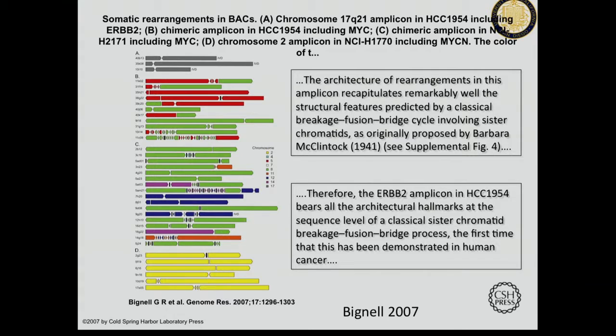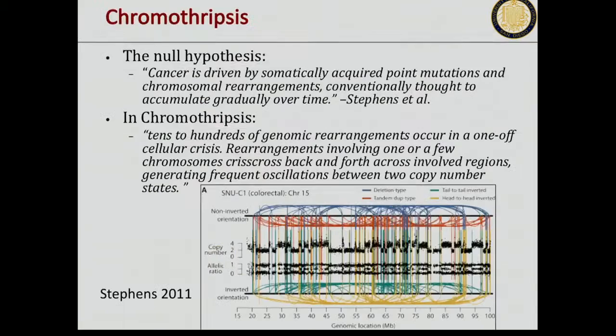The other model is chromothripsis, which is quite an extraordinary event, first proposed by Stephens in 2011, where the genome shatters into many pieces, then the pieces come together. That's why you get these alternating copy number pattern changes as well as very complex rearrangements. Can we detect more of these in tumor genomes?